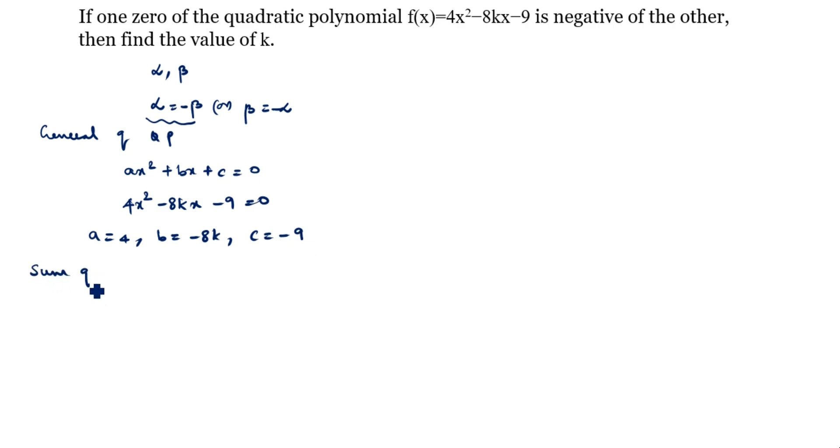What is the sum of the zeros formula? Sum of the zeros (α + β) = -b/a. What is the product of zeros formula? Product of zeros (αβ) = c/a.